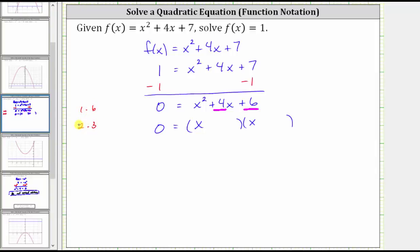We could use two negative factors, but because the sum has to be positive, we know we can't use two negative factors. Notice how we have a problem here because one plus six is seven, not four, and two plus three is five, not four.